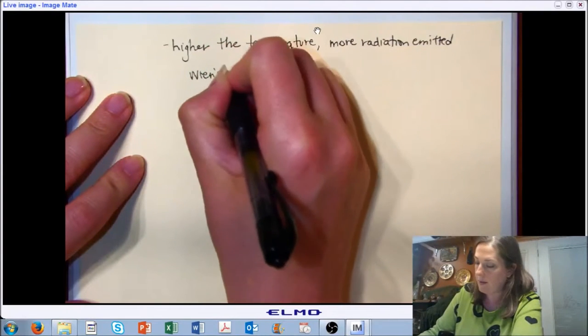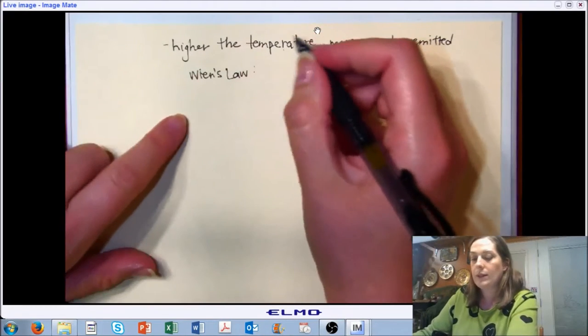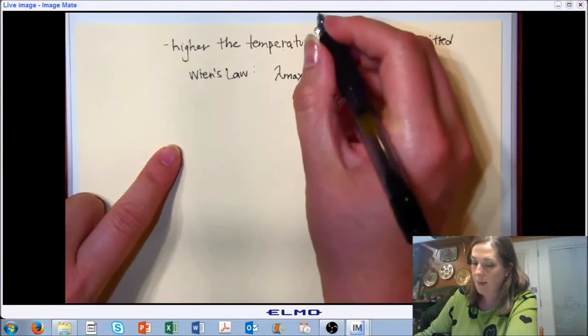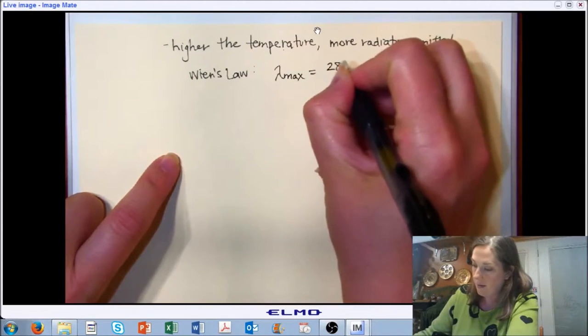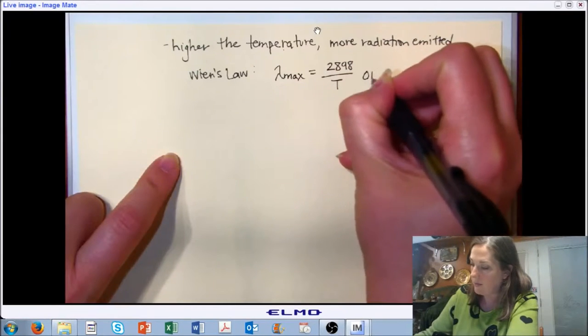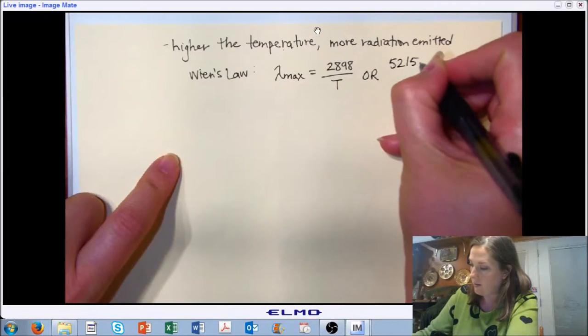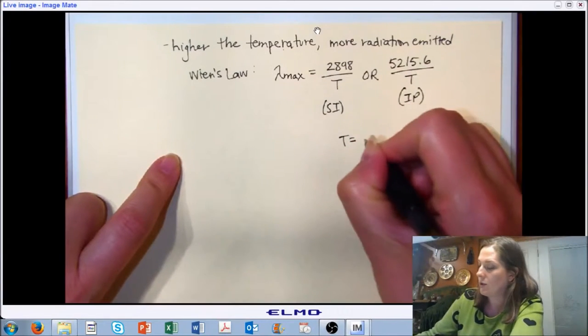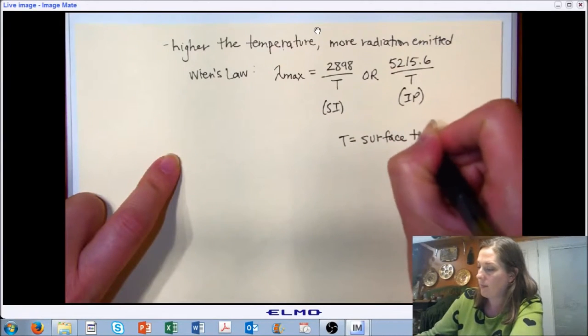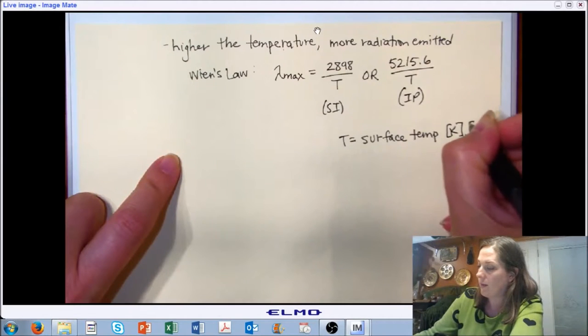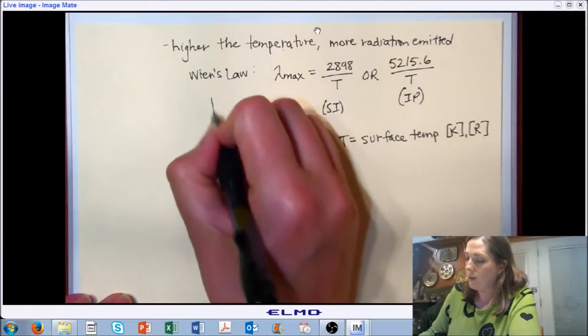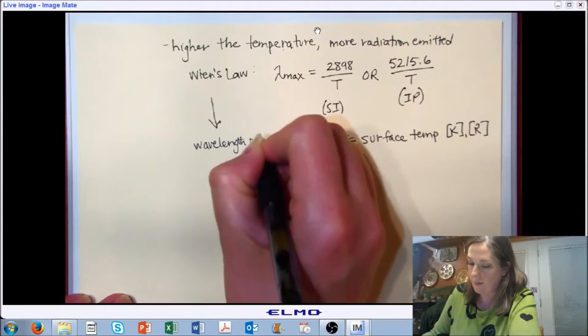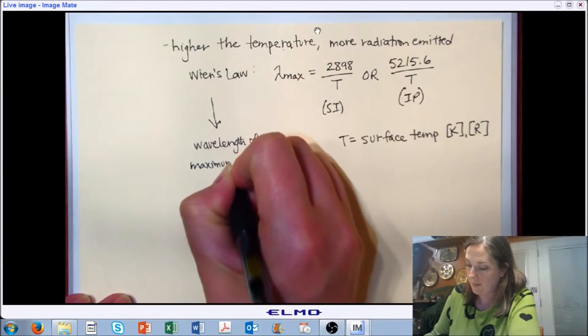Wien's law says that the wavelength of maximum emissive power is related to a constant divided by surface temperature. We have different constants depending on which set of units that you're in. In this case the T is your absolute temperature of your surface, and it's going to be in the respective units, either Kelvin or Rankine.